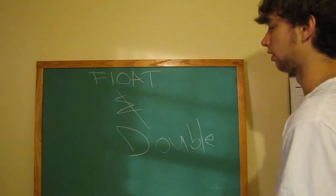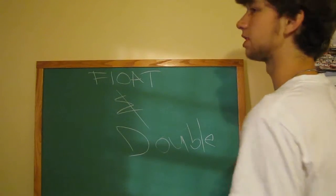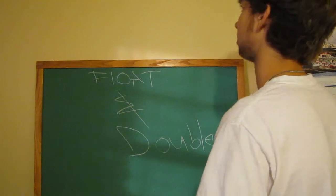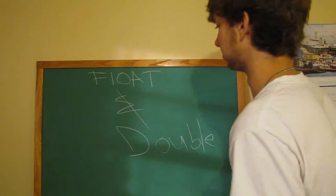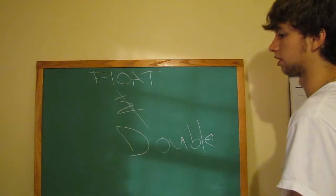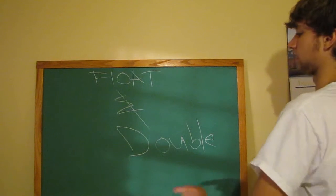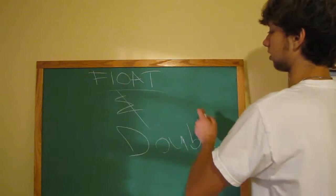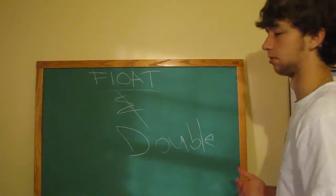So, a float, it's a real number, which means it allows for decimals, and it's a single-precision, 32-bit number, compared to this, which is a 64-bit number. So, basically, this number is way larger than this number.